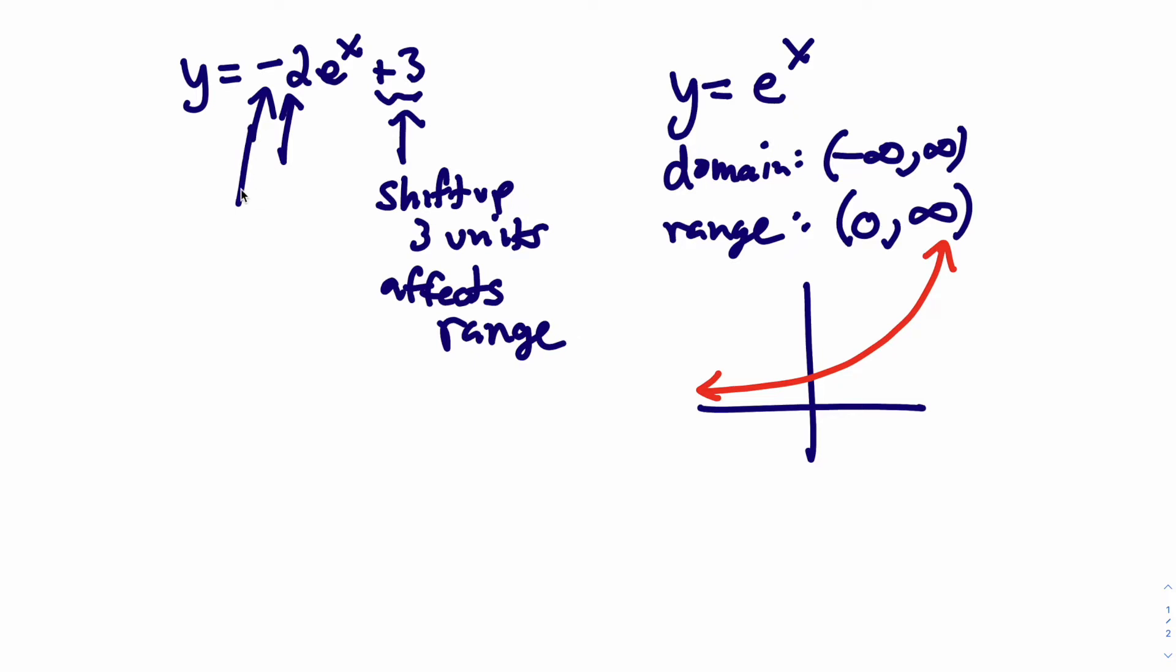The negative in front is an x-axis reflection. That affects the range. The 2 is a horizontal shrinking. But that doesn't affect anything since your domain goes from negative infinity to infinity.